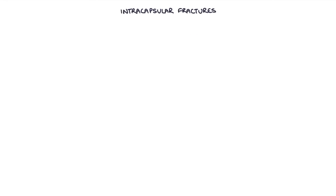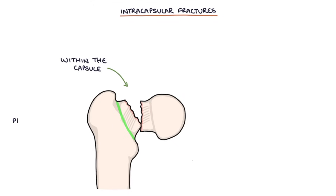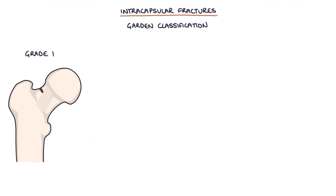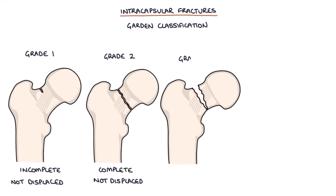Intracapsular fractures involve a break in the femoral neck within the capsule of the hip joint, affecting the area proximal to the intertrochanteric line — above the line between the greater and lesser trochanter. The Garden classification is used for intracapsular neck of femur fractures. Grade 1 is incomplete and not displaced. Grade 2 is a complete fracture, not displaced. Grade 3 has partial displacement and the trabeculae are at an angle across the fracture site.